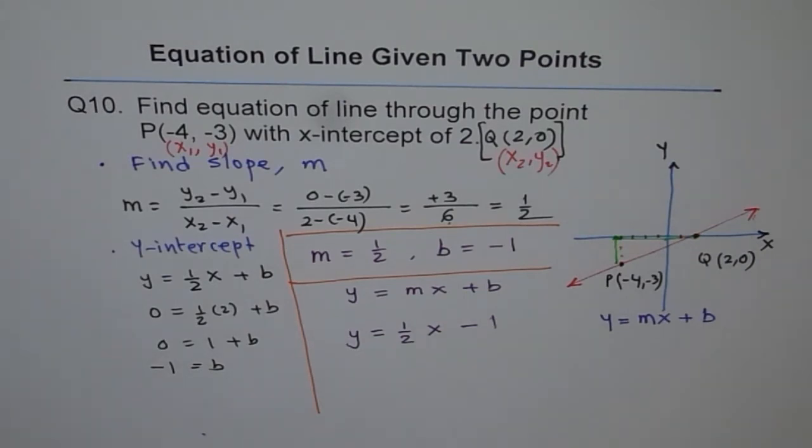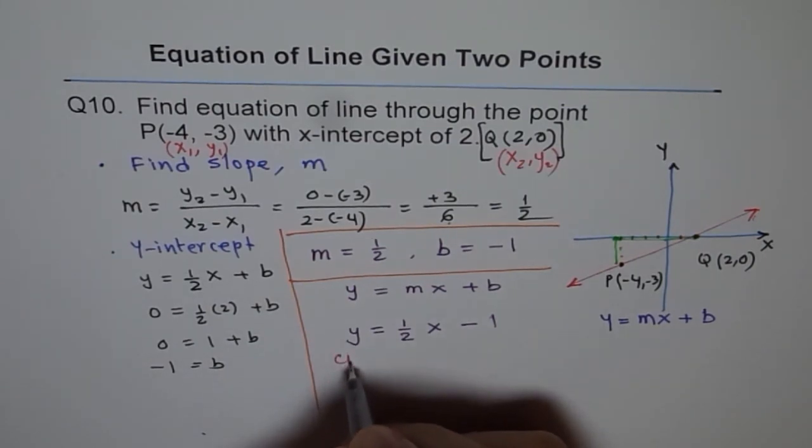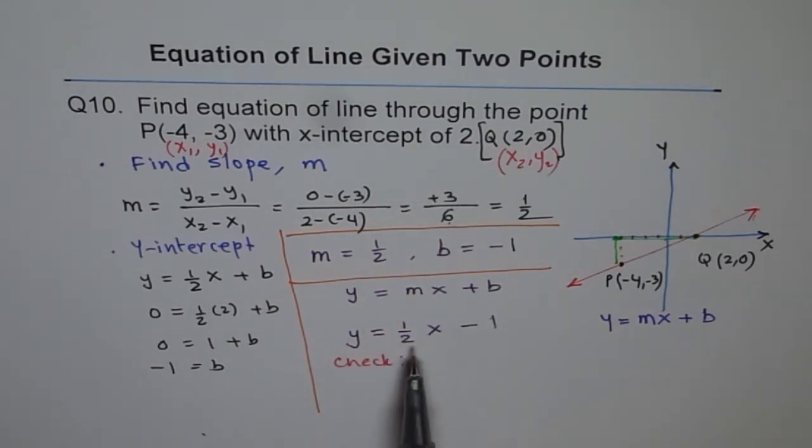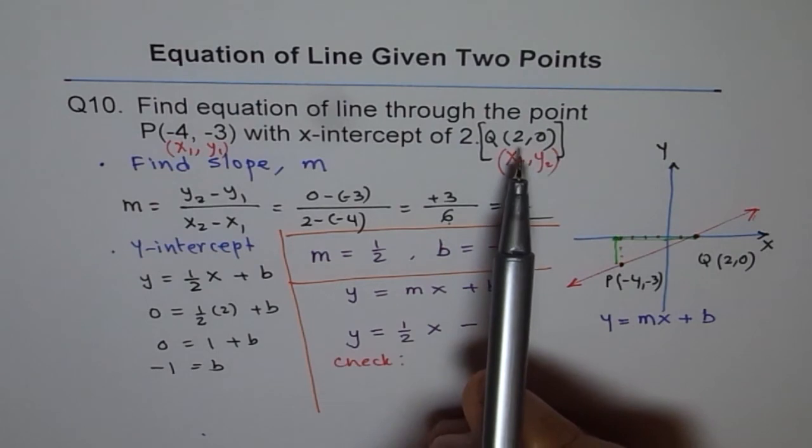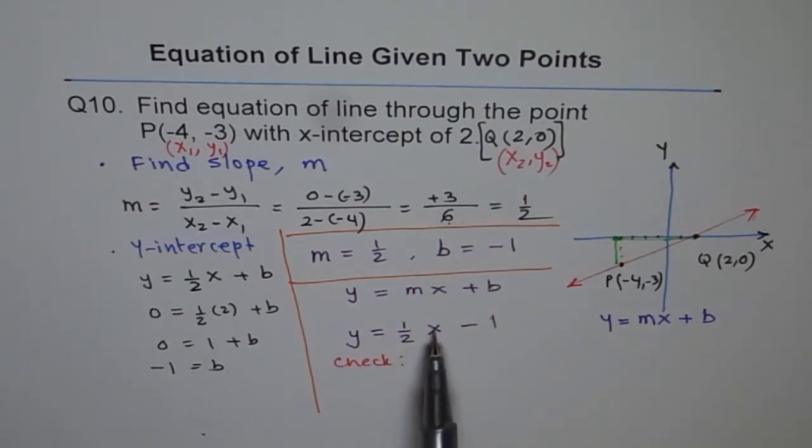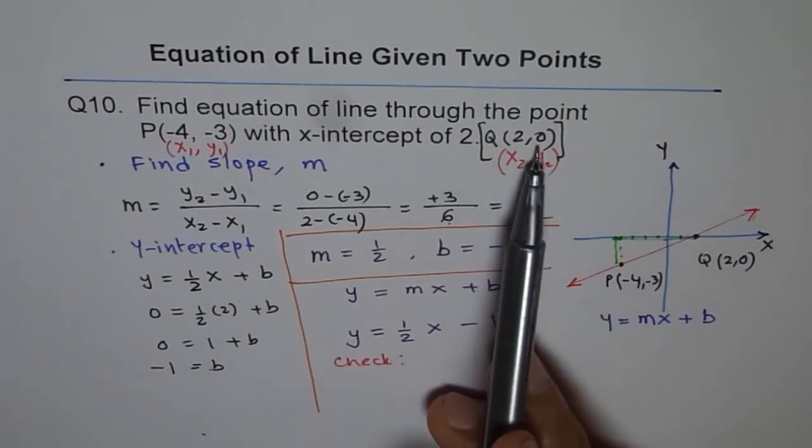One thing which I would like you to do now for this is to check whether these points lie on your line or not. For example, if you have to check this point, then plug in 2 here. And if I do that, 2 divided by 2 is 1 and 1 minus 1 is 0. Yes, I do get 0. So that is perfect.